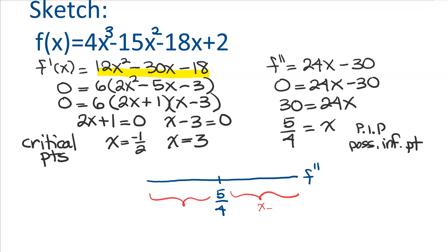So I'm going to pick over here, I'm going to pick x is 3, and over here, I'm going to pick x is negative 1 half. And I'm going to plug these values, remember, into the second derivative. So into my 24x minus 30.